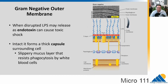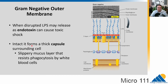When the LPS is contained around the cell, it forms a slippery mucus layer that we call a capsule. This can help resist phagocytosis by white blood cells — your immune cells that go out, find bacteria, engulf them, and degrade them. This capsule is like slippery stuff on the outside that prevents the immune cells from grabbing the bacteria; they just slip off. So LPS is bad for us in two different ways.